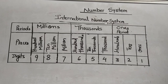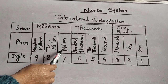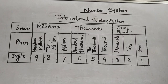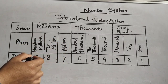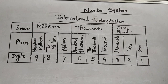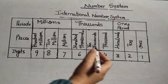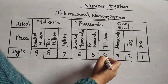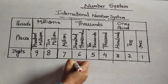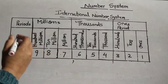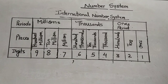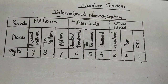In the international system, the millions period contains three places: million, ten million, and hundred million, meaning the seventh, eighth, and ninth digits. Commas are inserted from the right after every three digits. So: ones period covers the first, second, and third digits; thousands period covers the fourth, fifth, and sixth digits; and millions period covers the seventh, eighth, and ninth digits.